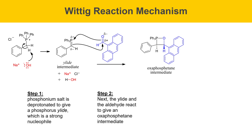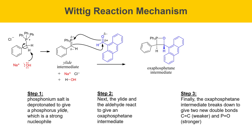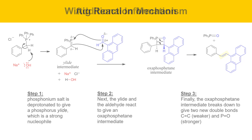That oxaphosphetane intermediate isn't stable, and in the third step it breaks down to give two new double bonds — a C-C double bond, which is weaker, and a phosphorus-oxygen double bond, which is stronger. The alkene product in today's reaction is produced as a trans species; however, the Wittig reaction can produce either trans or cis, and sometimes the selectivity can be a little bit complicated. It varies from reaction to reaction, so just be aware of that.